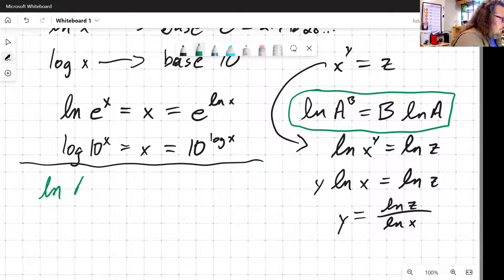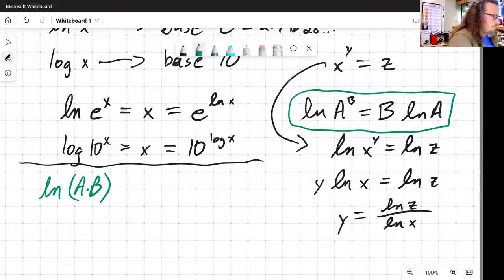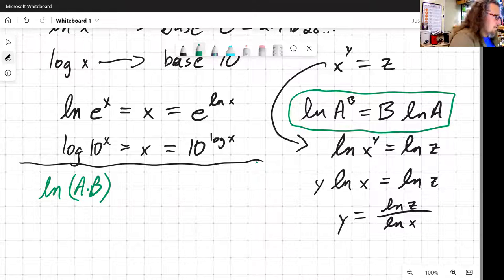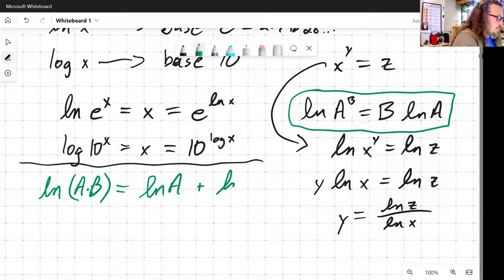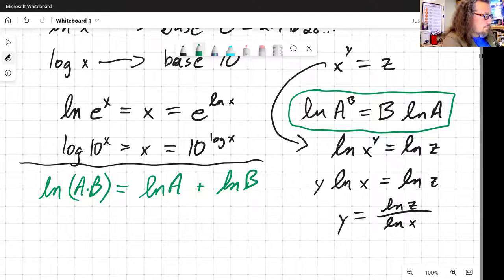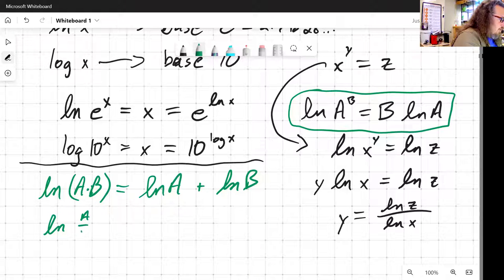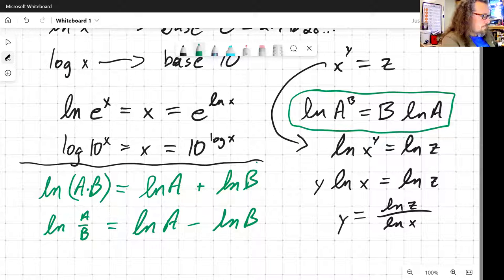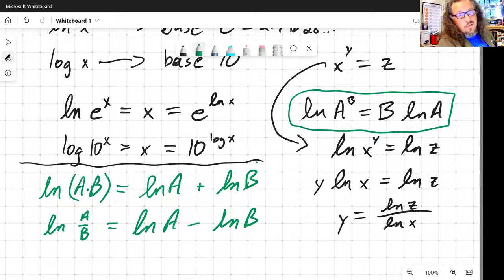What about some other relationships? Natural log of A times B, so natural logs also give a way of separating multiplication. Natural log of A times B is equal to natural log of A plus natural log of B. And another version of that, natural log of A over B is equal to natural log of A minus natural log of B.